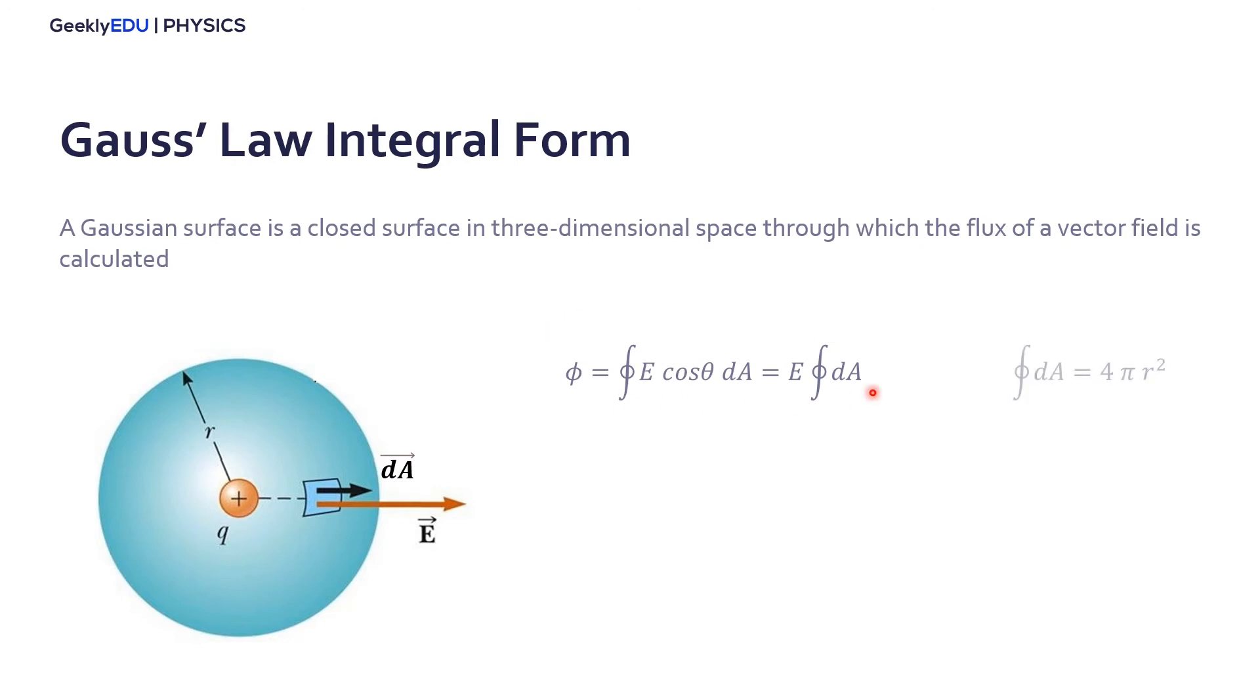Now, the linear integral of dA is actually you're summing the area, all these small areas of the surface. So actually this integral here is the surface area of a sphere, which is 4 pi r squared. And E is the electric field, we can calculate the electric field like this. We have another video talking about the electric field, and we talk more about this formula here, so you can take a look there.